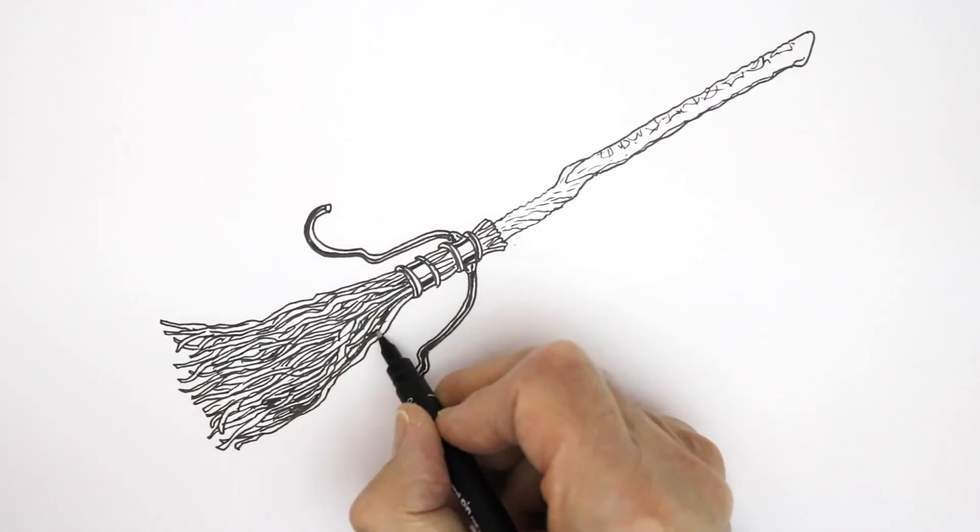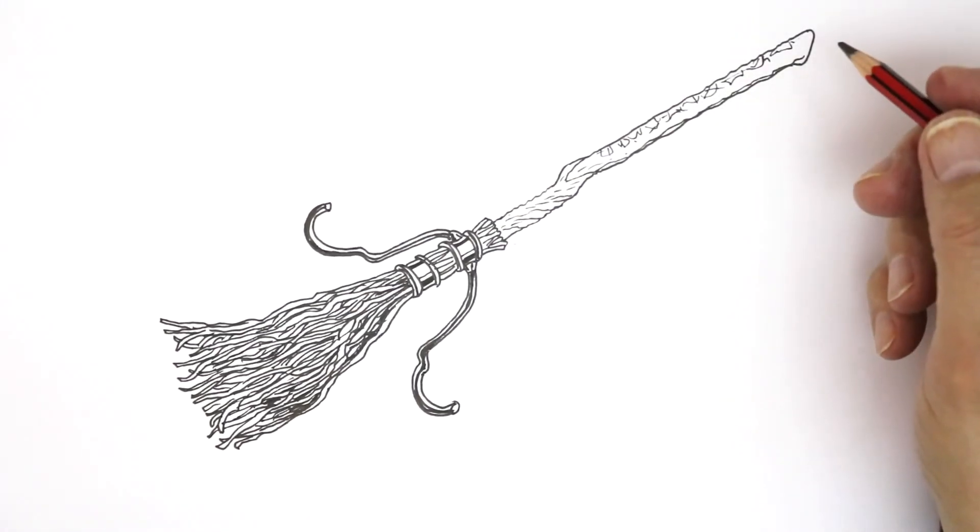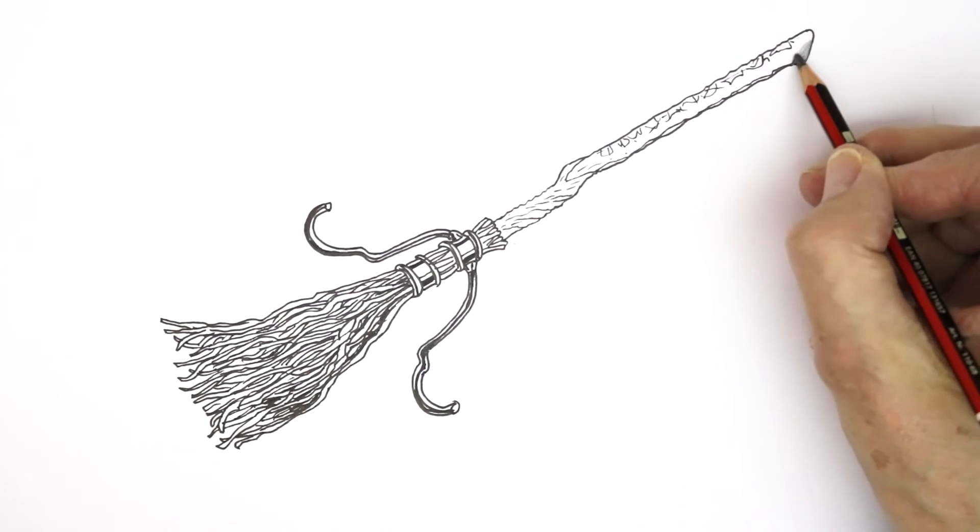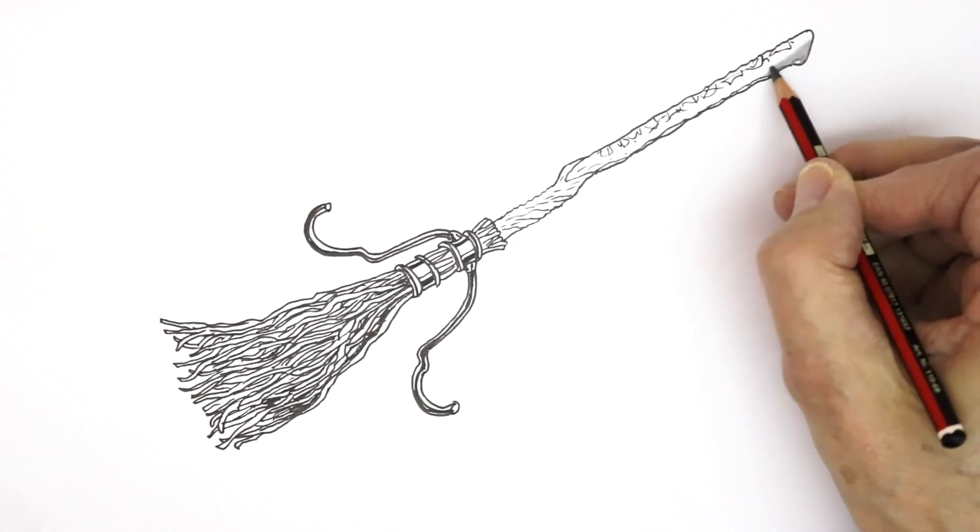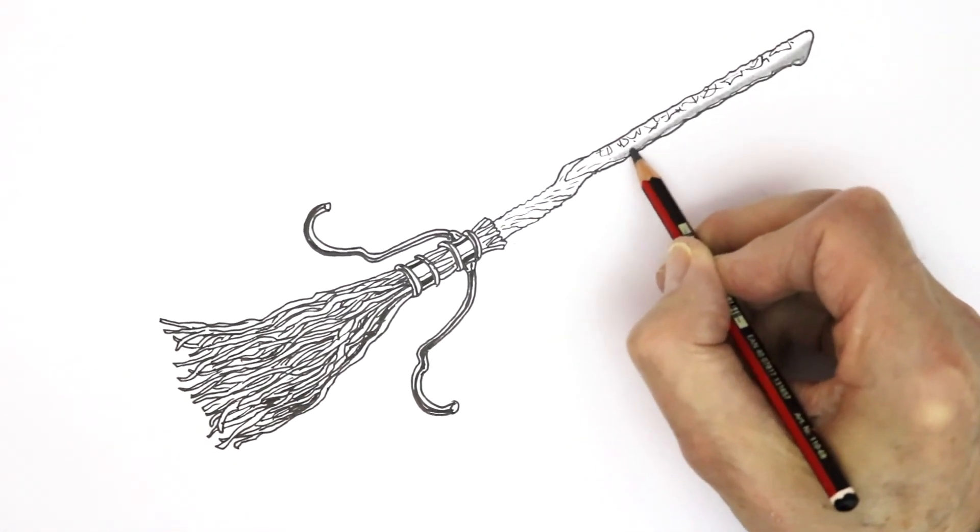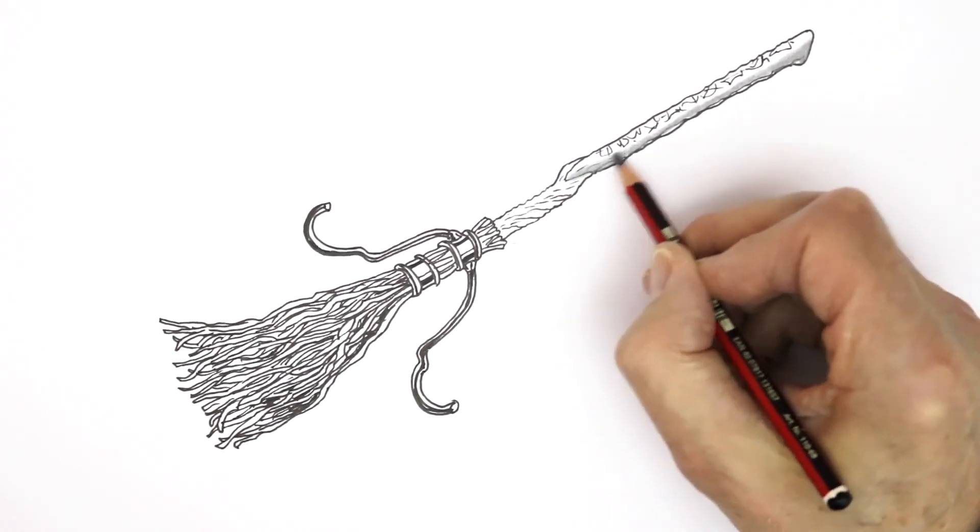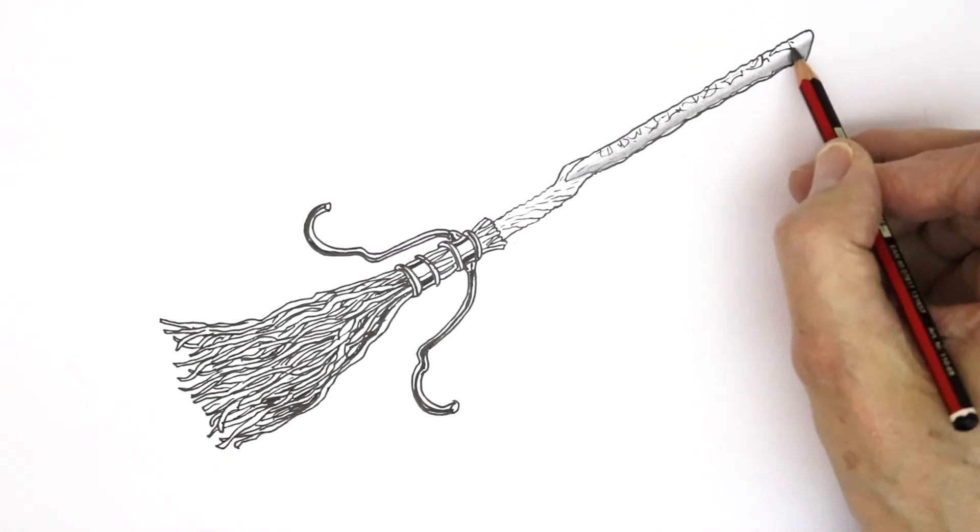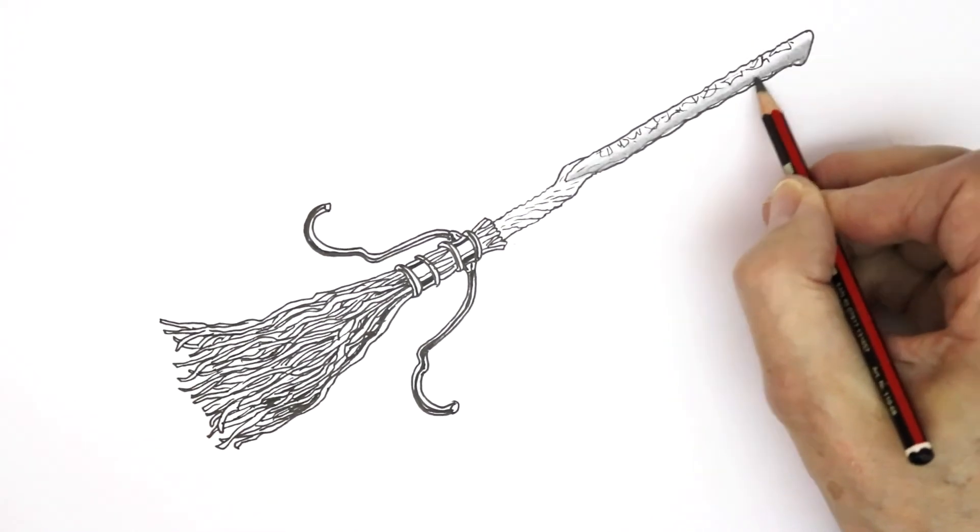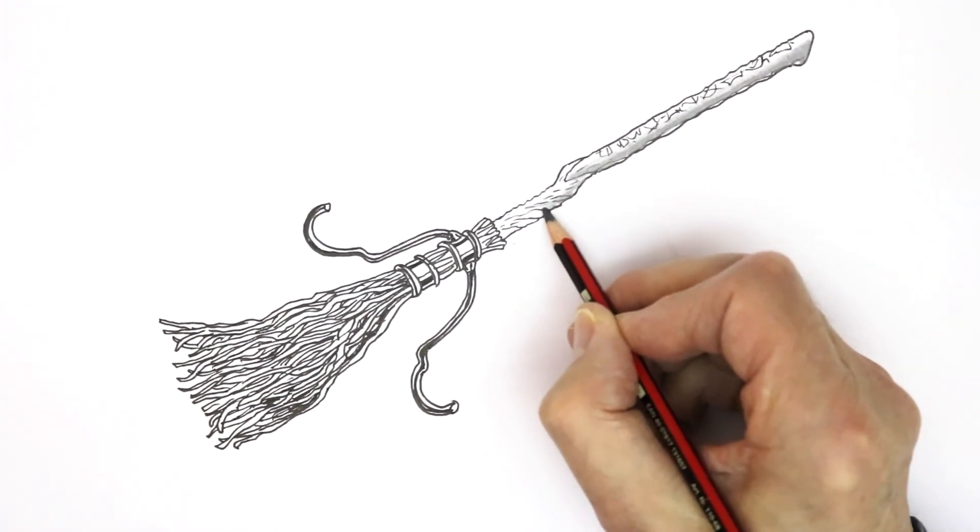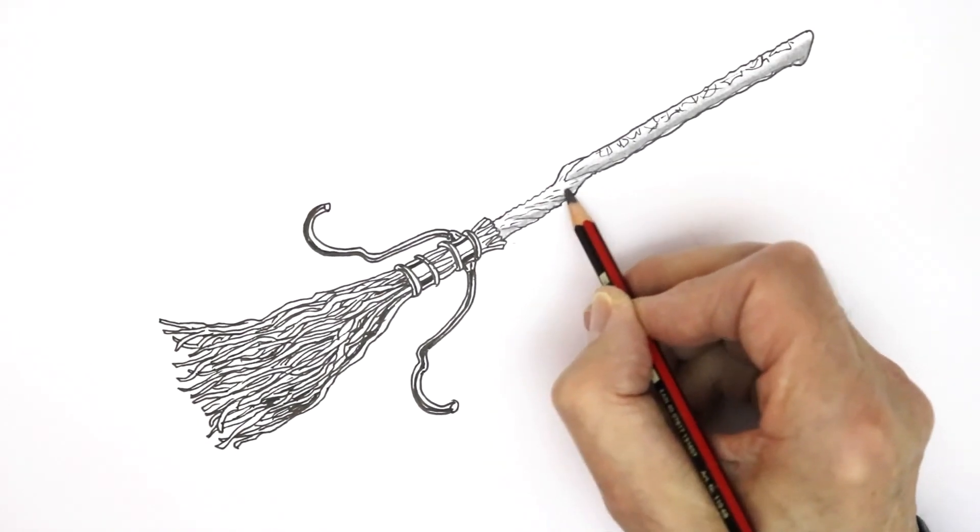But first of all, I'm going to get a pencil and do a bit of shading. A 6B pencil here, and I'm going to start with the handle of the broomstick, the shaft. And of course, if you want darker shading, just put a bit more weight on your pencil, and the 6B is nice and soft, so you can get a nice and gentle transition from very dark up to light when you take the weight off your pencil. You see the weight when it gets dark, take weight off—it's lighter. And down here, maybe follow those lines in a bit like that.